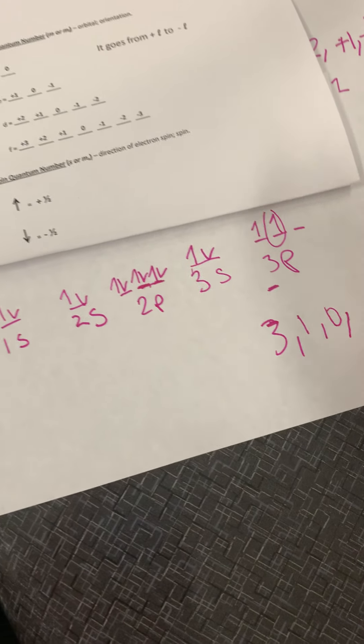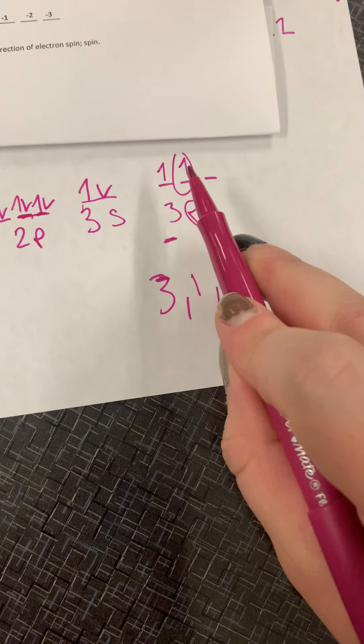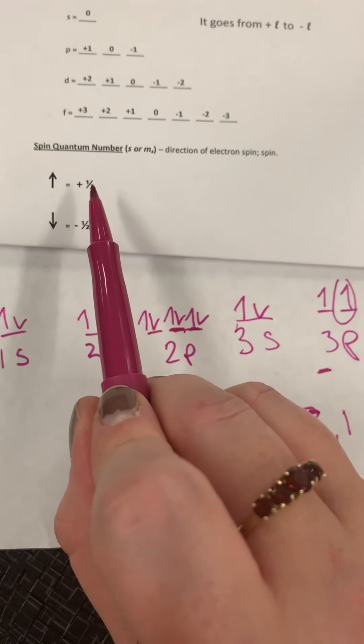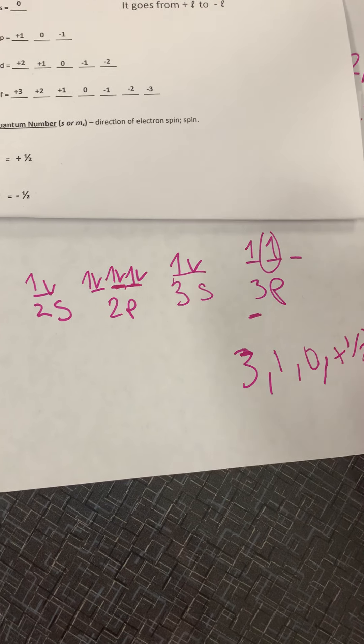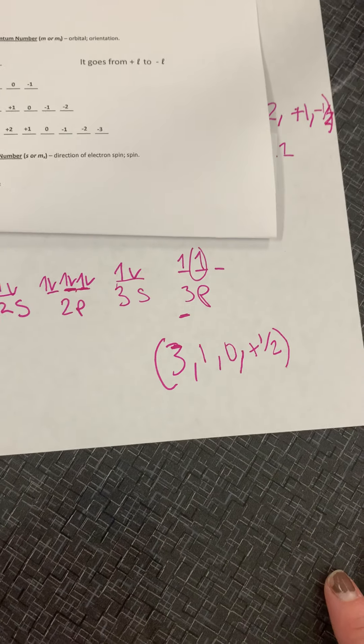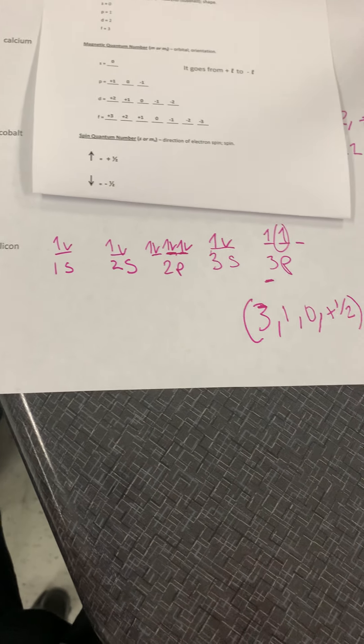And then lastly, is it going up or down? Well, this was not a paired. So it's going up still. So it gets a plus one half. Plus one half. And then I put it in parentheses. And that's how you do those two. Okay.